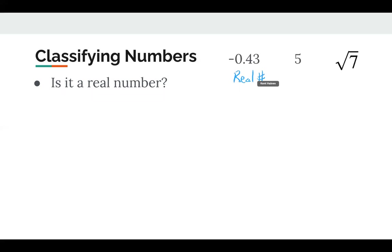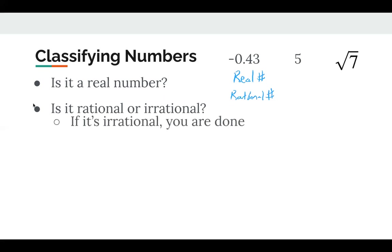Okay, great. Then we ask ourselves, is it rational or is it irrational? Well, negative 0.43, could it be written as a fraction? Well, it's 43 hundredths. Obviously that's a decimal that terminates. So I could write that as a fraction easily. So yes, it is a rational number. Okay. If it's irrational, by the way, you're done. If it's irrational, you're done categorizing. But if it's rational, we keep going. So is it an integer? Is negative 0.43 an integer? And the answer is no. So we're done.